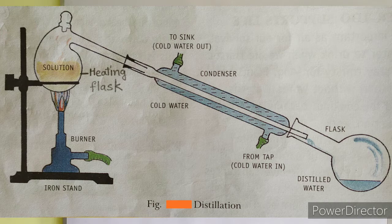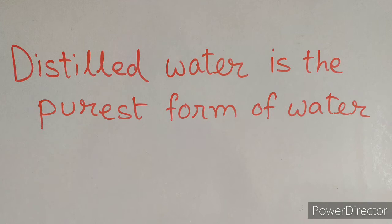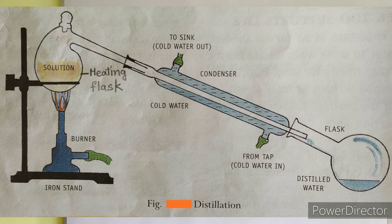On entering the cold condenser, the hot steam or water vapour changes into water again. It collects in the flask below in the form of distilled water. Distilled water is the purest form of water — it does not contain any impurities or germs. The impurities that were dissolved in the water previously are left behind in the heating flask.